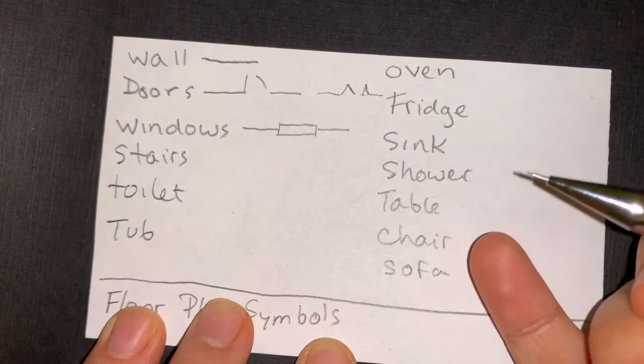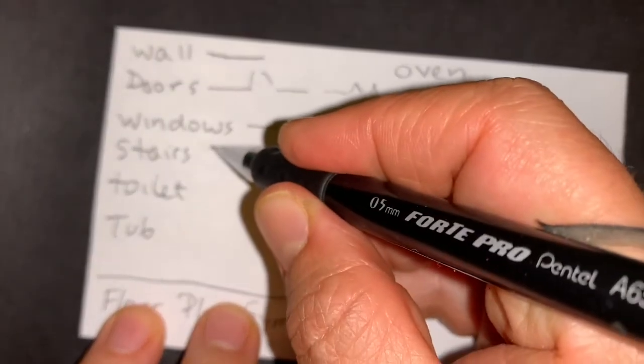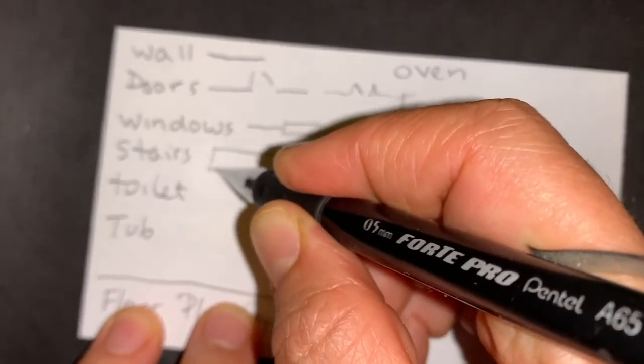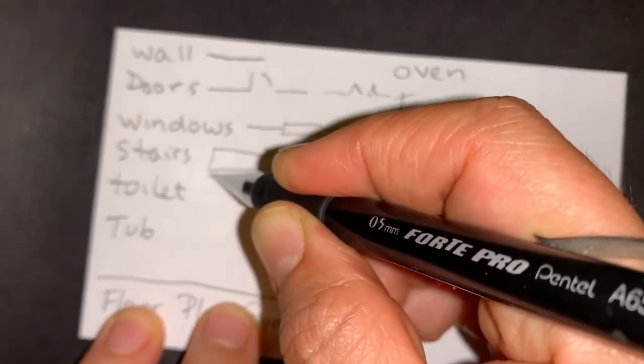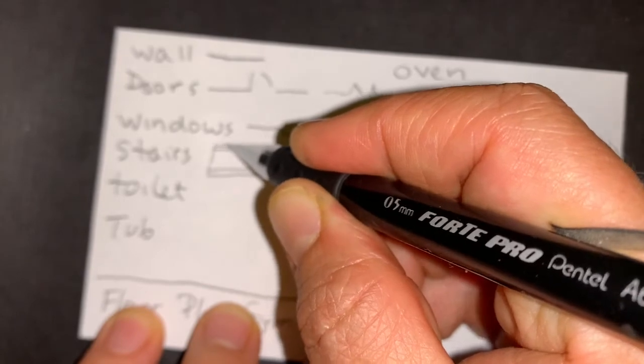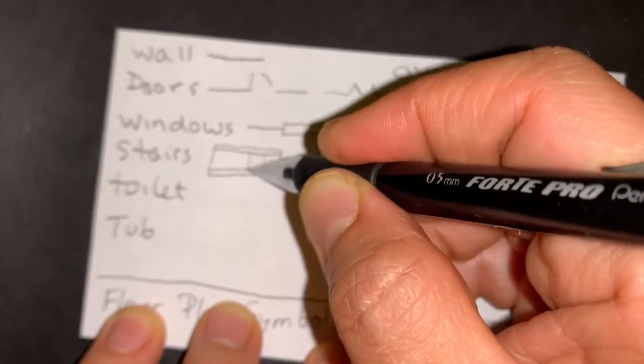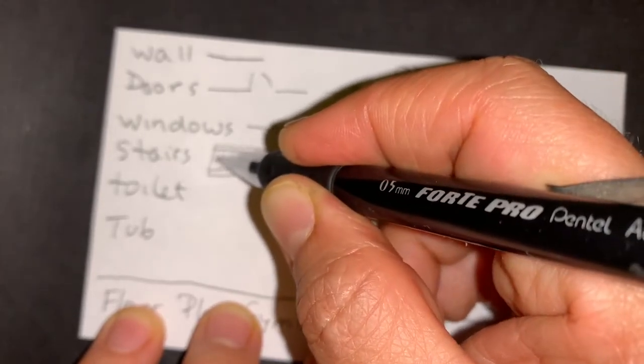Stairs can be in multiple directions, but they usually have an arrow indicating which direction is up. So you can have stairs this way, stairs on the side, and then an arrow up.